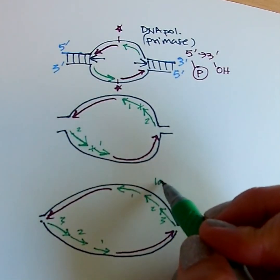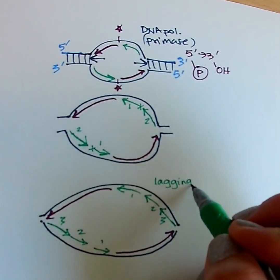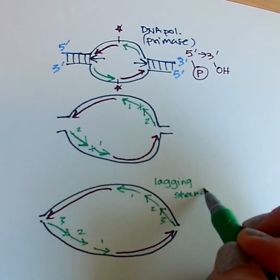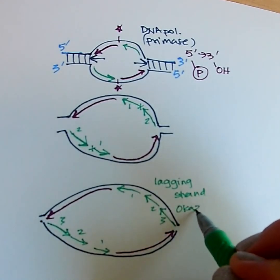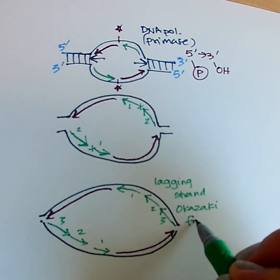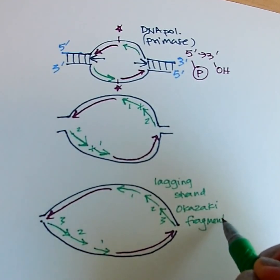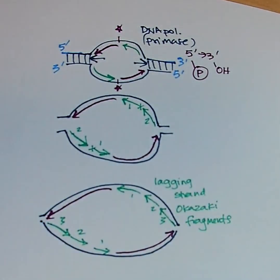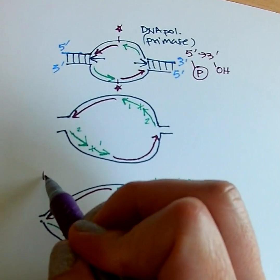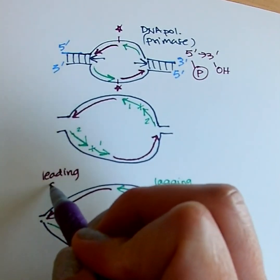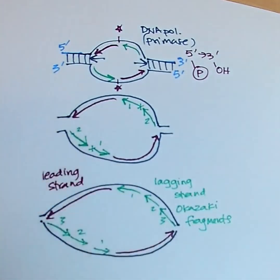So this is our lagging strand, and we call these little pieces Okazaki fragments. The purple one is our leading strand, and it gets made continuously.